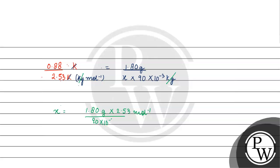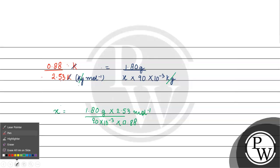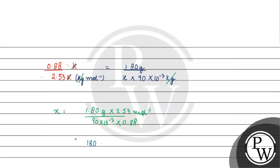Into 0.88. X will be 1.80 divided by 0.88, then 2.53, then 90 times 10 to the power minus 3. Approximately this is 57.5 or 58 grams per mole.